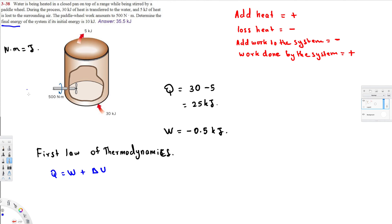So let's apply all the values. Here we have Q, that is 25 kilojoules, and work done W we calculated total W, that is negative 0.5. Then we have delta U. Delta U is U2 minus U1. U1 is provided, that is 10 right here, initial energy.